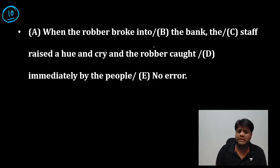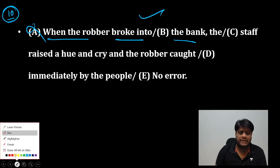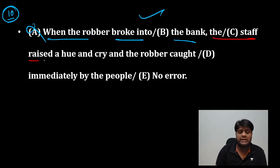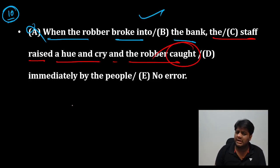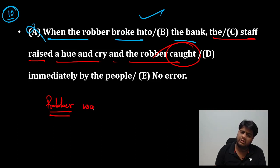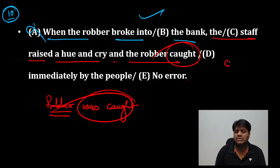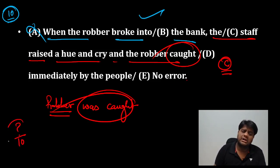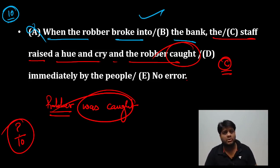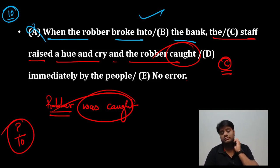Question number 10: 'When the robber broke into the bank' — बिल्कुल सही, इस part में कोई गलती नहीं है। 'The staff raised a hue and cry' — staff ने शोर मचाया, सही है। 'And the robber caught' — 'robber caught' नहीं, 'robber was caught' सही है। Answer C है — over and out! Students, मुझे comment section में 10 में से आप लोगों का score चाहिए।